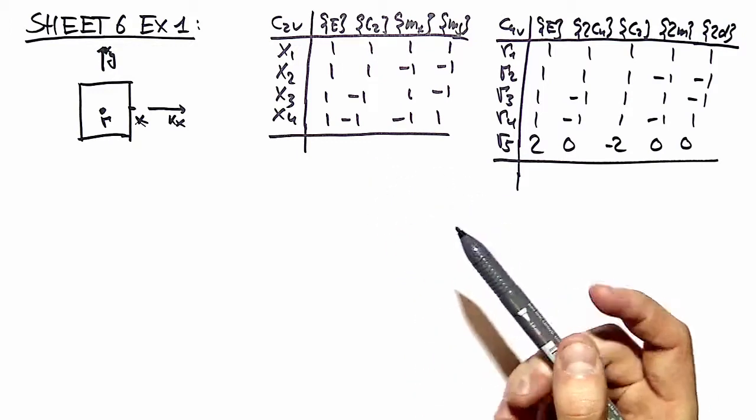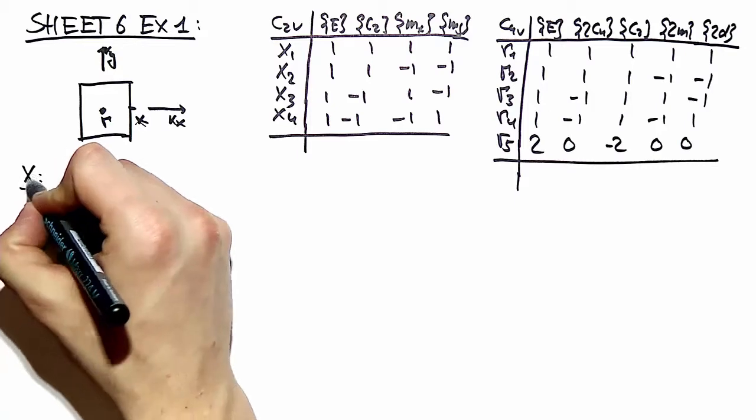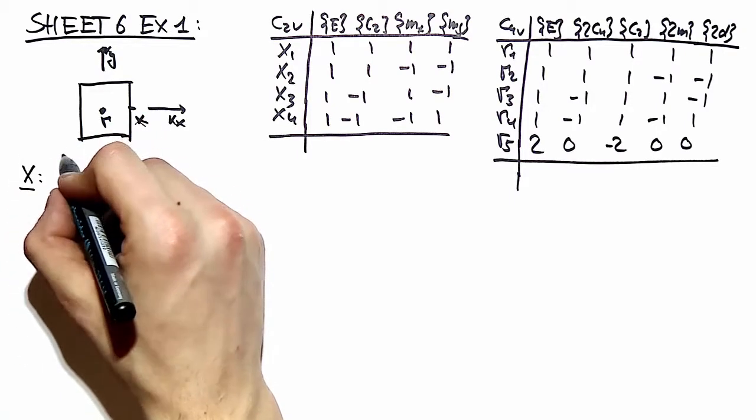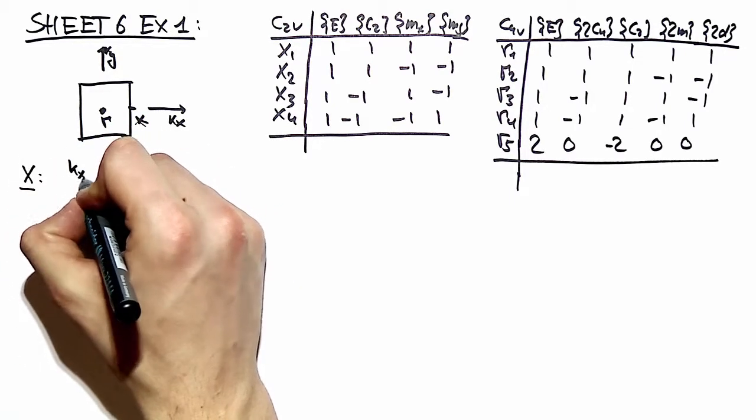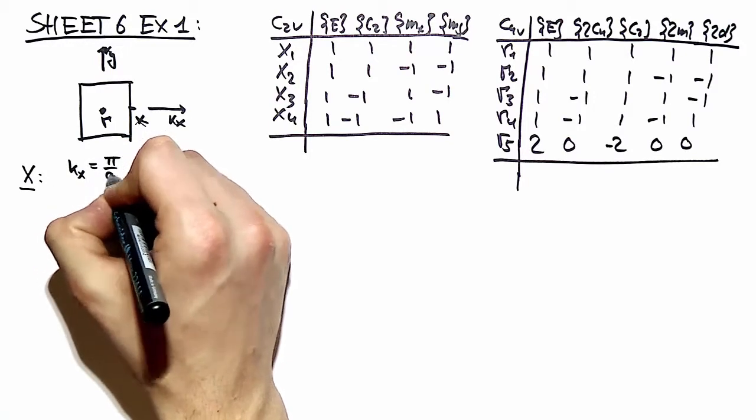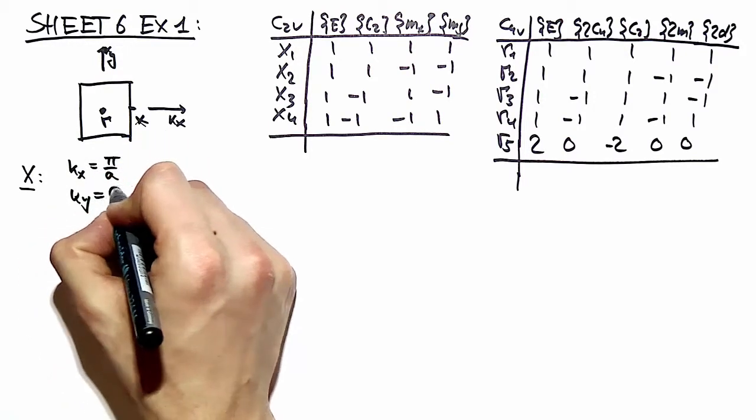So let's move on. Concerning the x point, we have two different k vectors, k directions. In kx direction we have the k vector π/a and in ky direction we have zero.